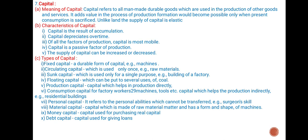Capital — Meaning: Capital refers to all man-made durable goods which are used in the production of other goods and services. It adds value in the process of production. Capital formation would become possible only when present consumption is sacrificed. Unlike land, the supply of capital is elastic. Characteristics of capital: Capital is the result of accumulation. Capital depreciates over time. Of all the factors of production, capital is most mobile. Capital is a passive factor of production. The supply of capital can be increased or decreased.